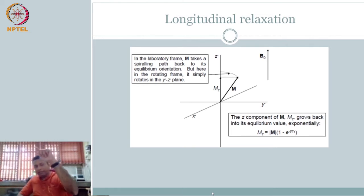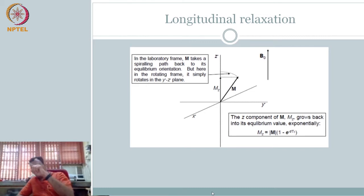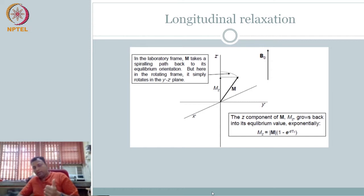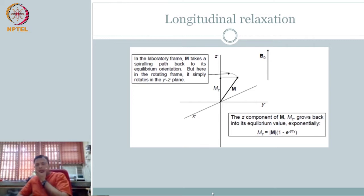The decay in the free induction decay started with a maximum value, and then with time it decays — initially faster due to the T2 star effect, and then it continues to dephase due to the T2 effect, and eventually the signal goes to zero. On the other hand, the Mz component increases due to T1 relaxation time.